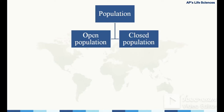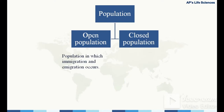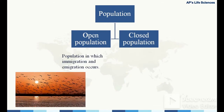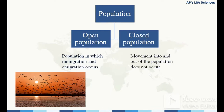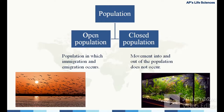The first type is open population, in which immigration and emigration occur. Examples include migratory birds or any group of animals where movement in and out is possible. Closed population is where movement into and out of the population does not occur — for example, life inside an aquarium.